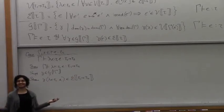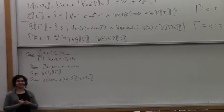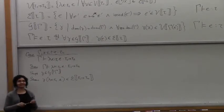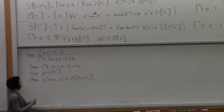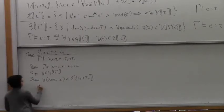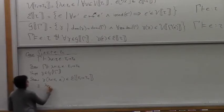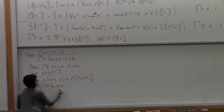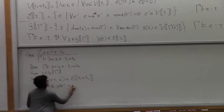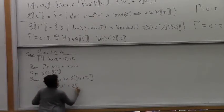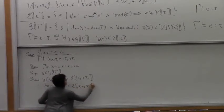We can simplify the substitution — let's push the substitution in. Showing this is equivalent to showing that lambda x colon tau 1 dot gamma e belongs to E of tau 1 arrow tau 2.